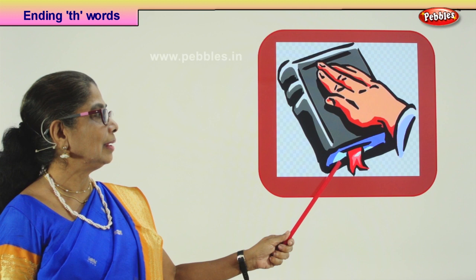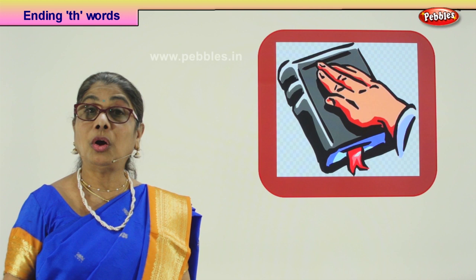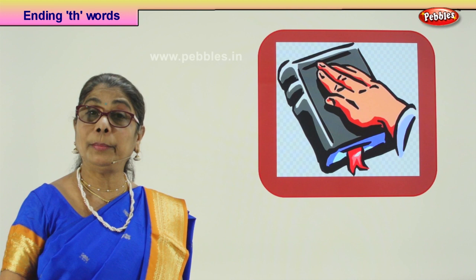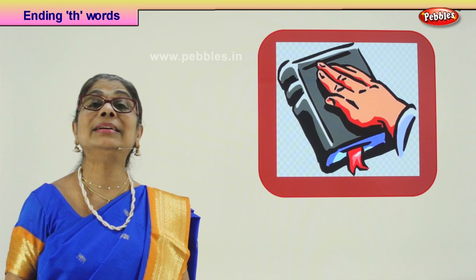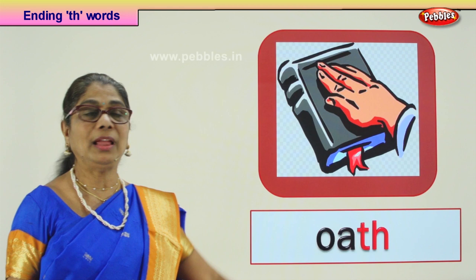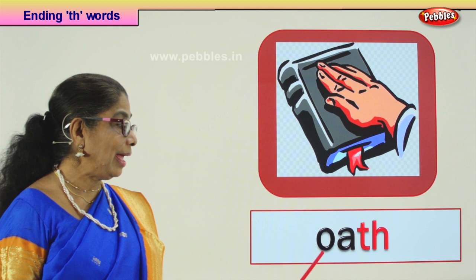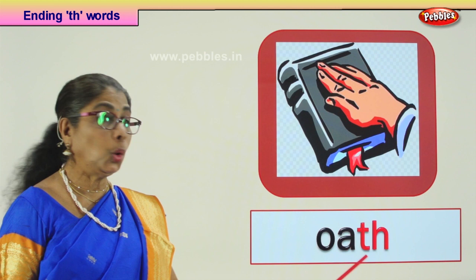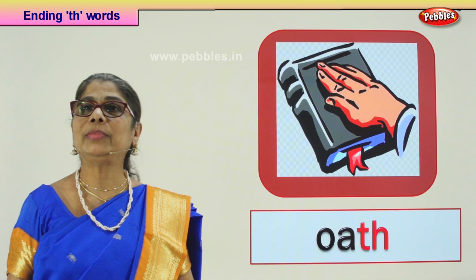Look — what do we have here? What is this? It's a holy book. On the holy book, if you place your hand and make a promise, you must only tell the truth — you mustn't tell lies. If you make a promise with your hand on the holy book, that means whatever you are saying is the truth and everybody will believe you. What is that word for it? Oath. Taking an oath means making a promise.